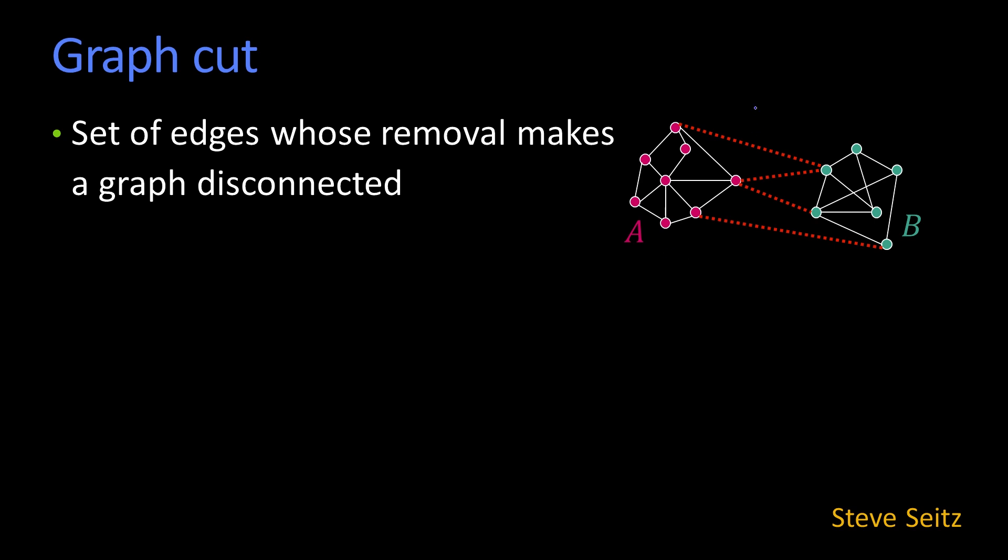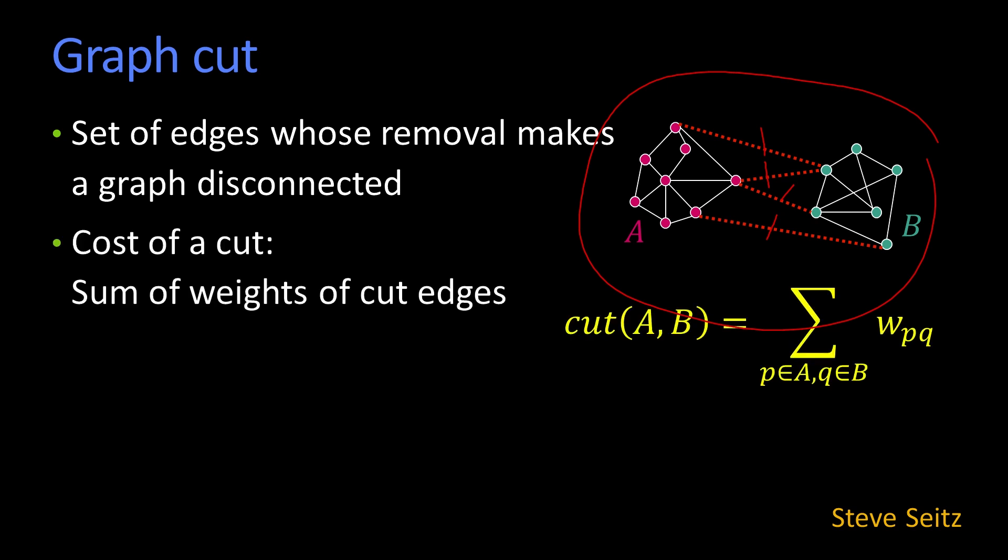So here I've got a graph, and the idea was originally it had lots of connections in it, and when I'm all done, I've decided to break this graph on those four links to create two different graphs, A and B, and they're totally disconnected. So those would be two segments in our image.